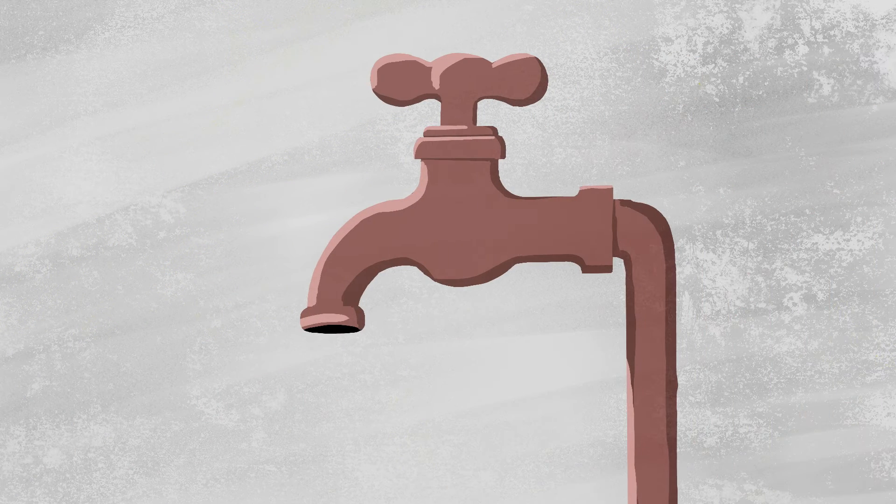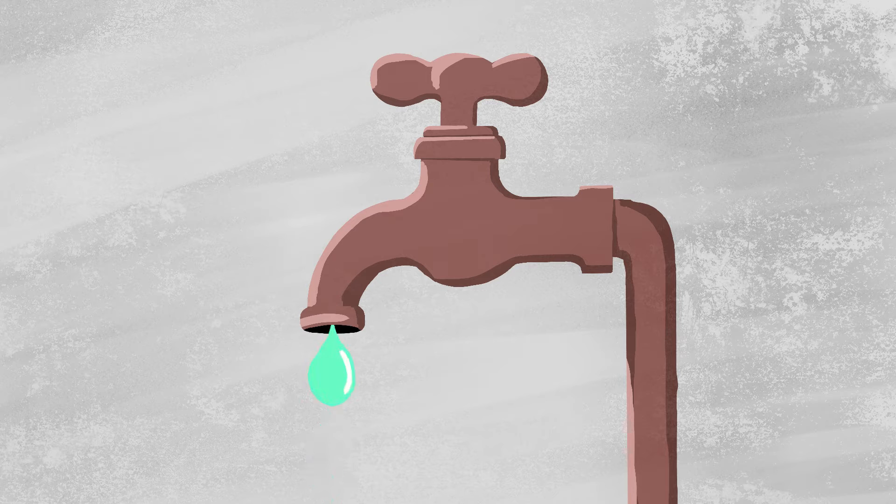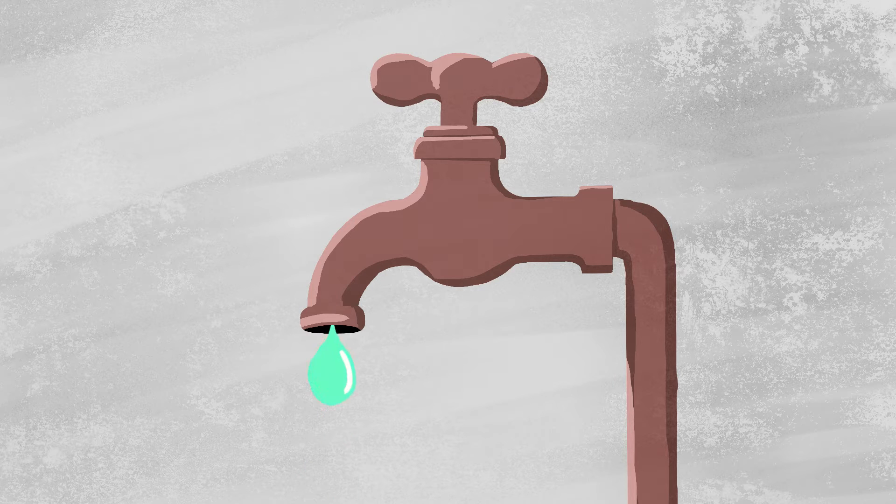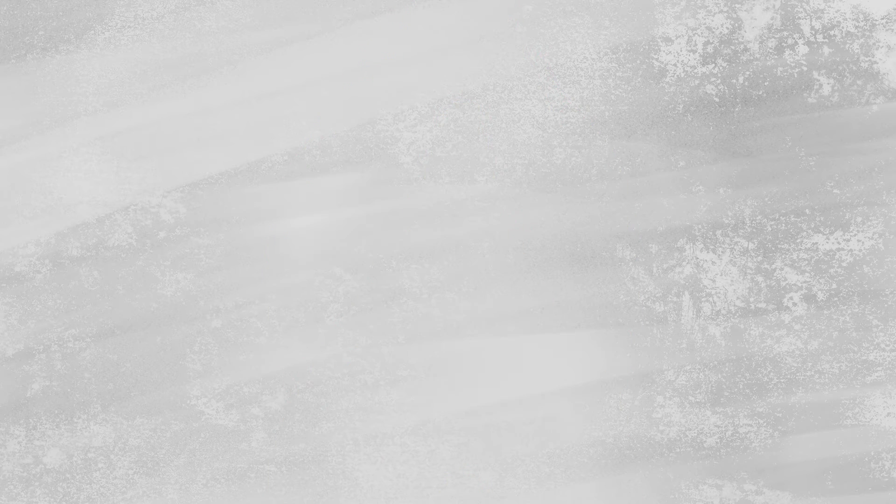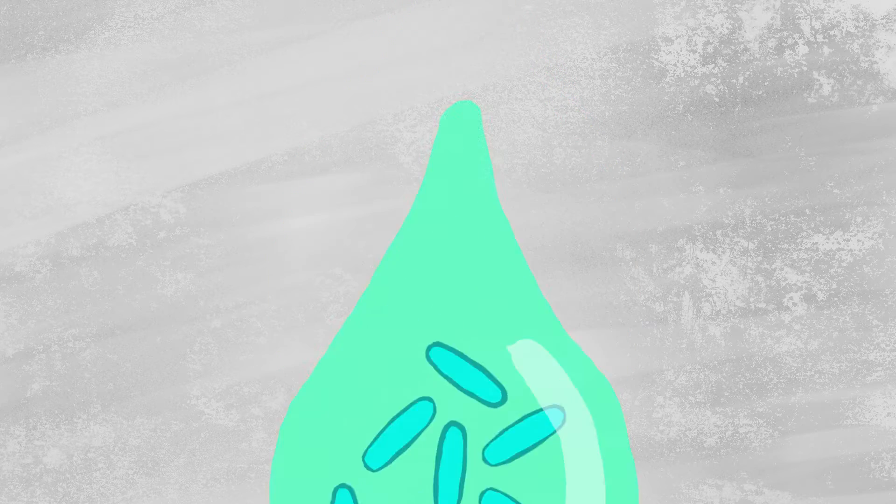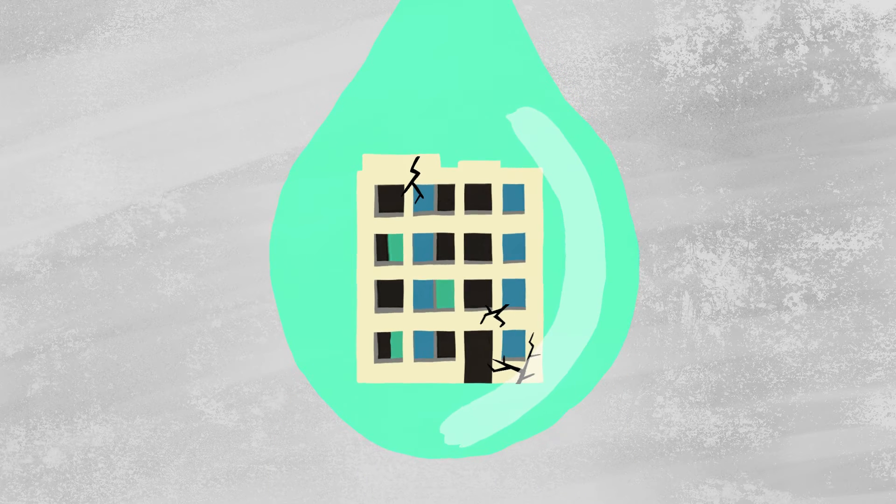However, there isn't strong evidence yet about how rainfall patterns might change. A lot of the same problems are likely to continue with warming, adding to the stress and causing reduced water availability, increased risk of disease, reduced crop and livestock productivity, and damage to infrastructure and buildings.